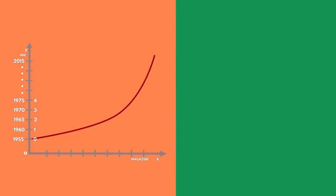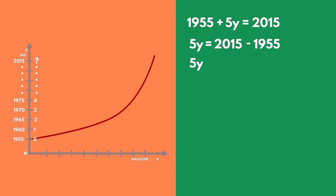First, we need to find out how many 5-year periods have passed since 1955 by 2015. We will translate the problem in terms of a simple equation.